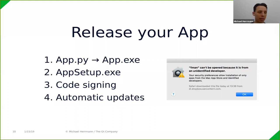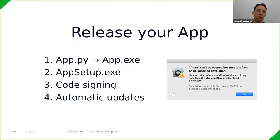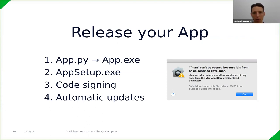When a user downloads your application from the internet, unless you take special measures, they will see a dialogue saying it can't be opened because it's from an unidentified developer. This is a warning meant to prevent the spread of viruses and malware. The way to get rid of this warning is via code signing, which digitally signs your binaries to tell the operating system who the creator is, so the OS can recognize it as coming from a reputable source.